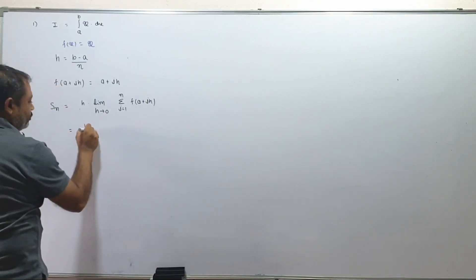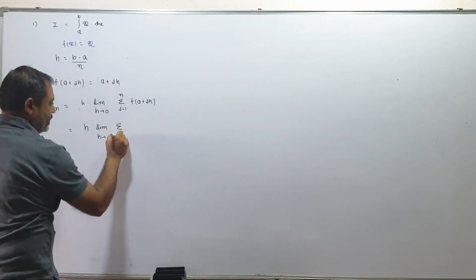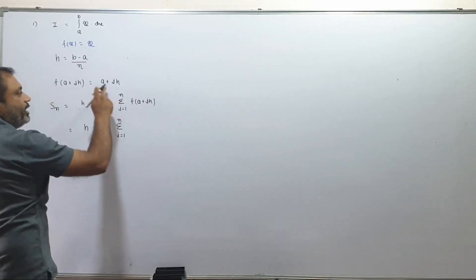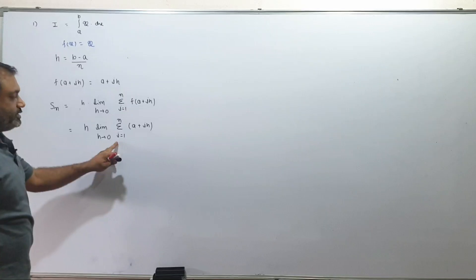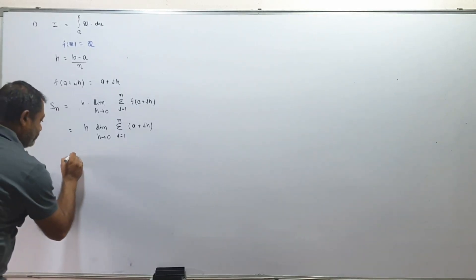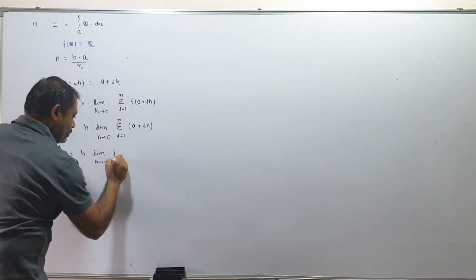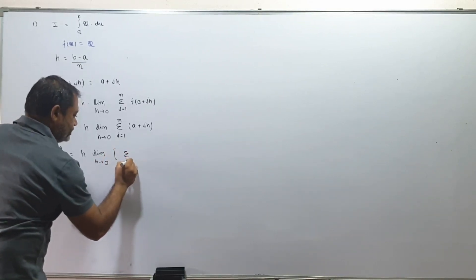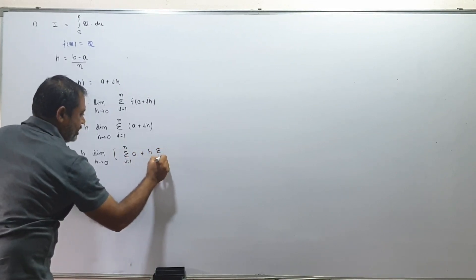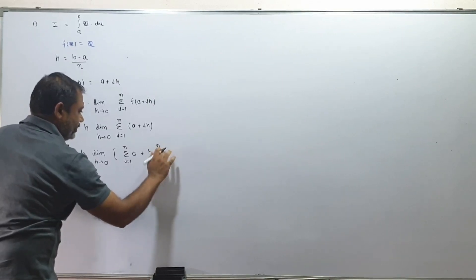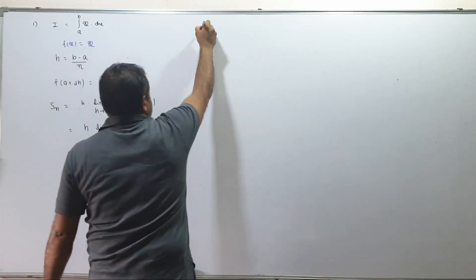Now, inside the sigma, let me distribute. We get: limit h tends to 0, sigma i equals 1 to n, f of a plus i·h. Taking h inside the sigma: h times sigma from i equals 1 to n of (a plus i·h).